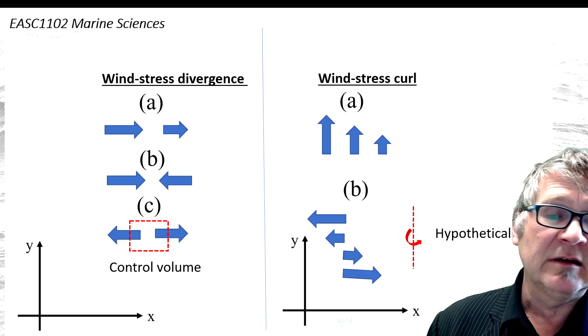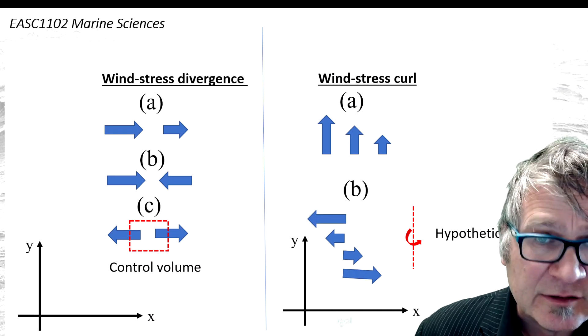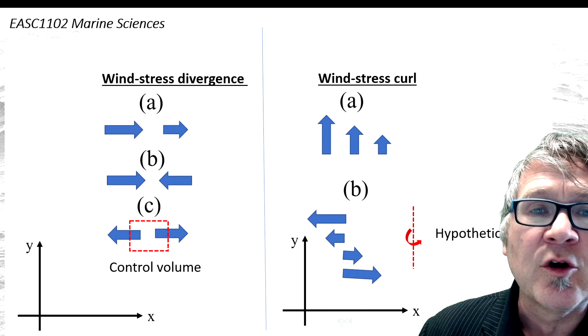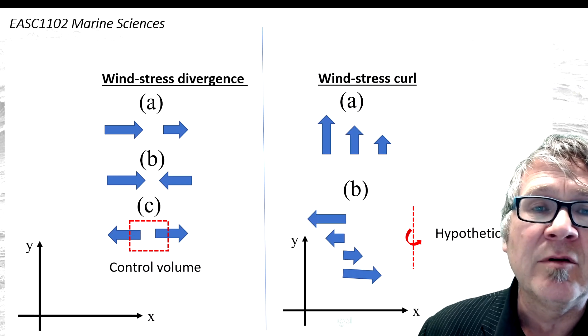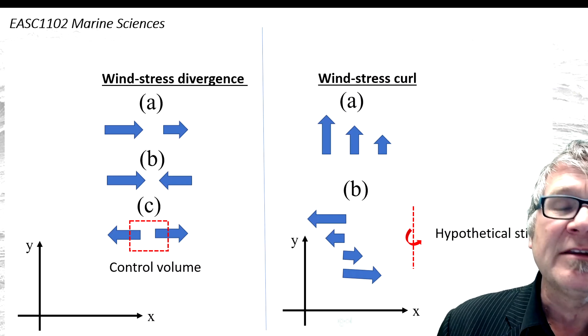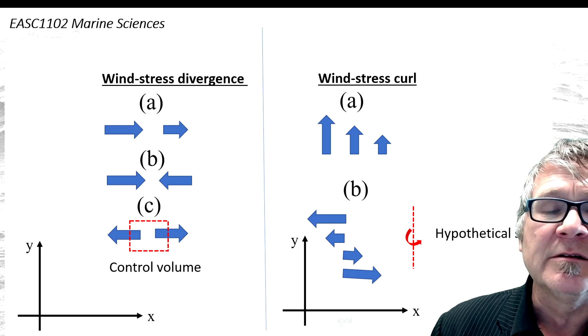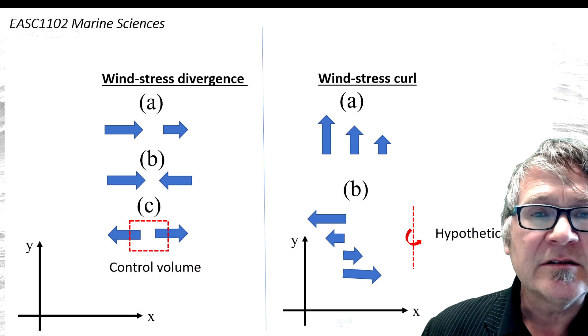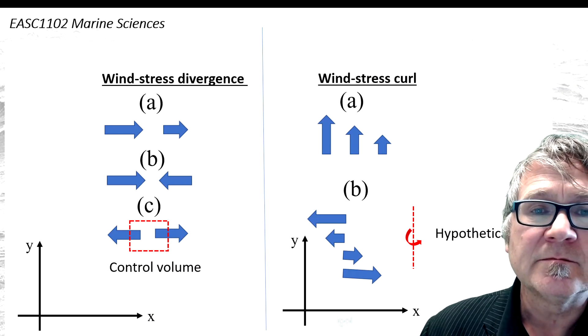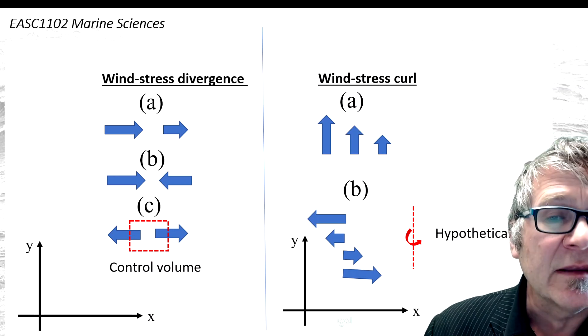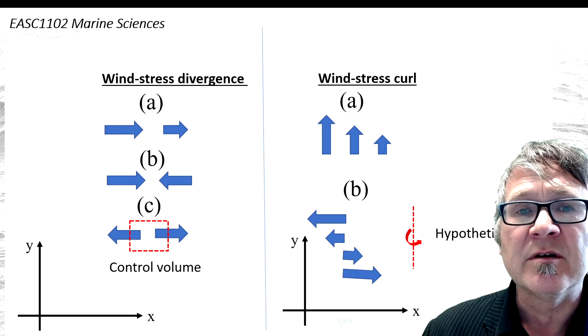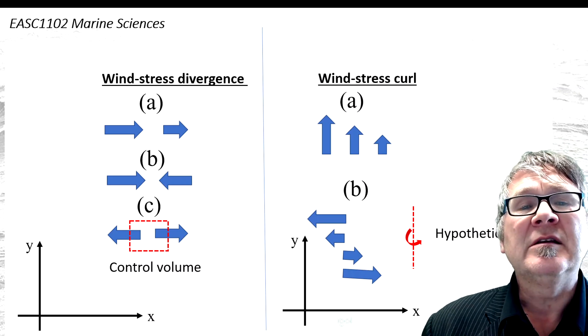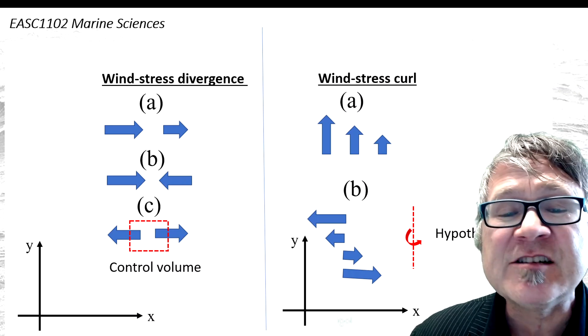Example B shows another case. To identify wind stress curl, put a hypothetical stick into the wind field. If that stick starts to rotate, then you have wind stress curl. Wind stress curl plays an important role in the development of ocean circulation patterns.